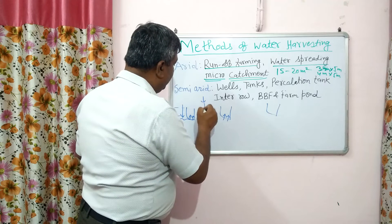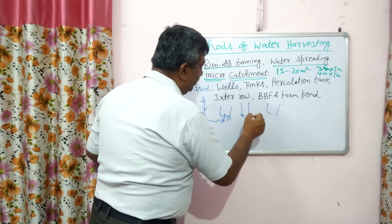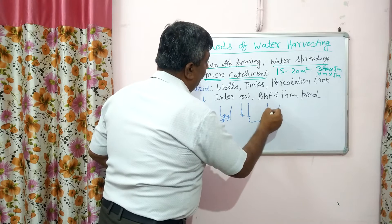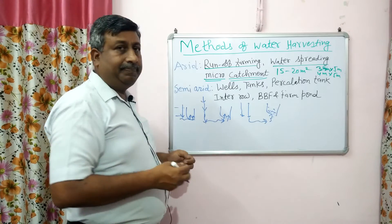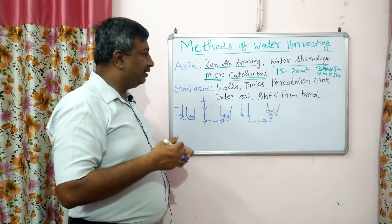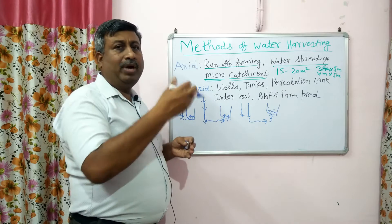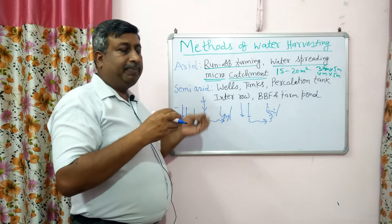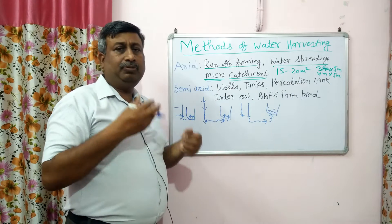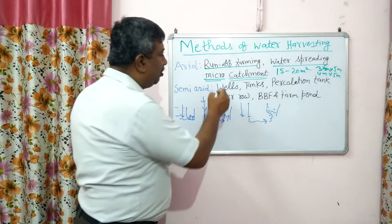Rainfall leads to percolation, which contributes to groundwater and recharges the well through seepage. We can use this well for irrigation, drinking, and livestock — water is lifted from the well. This is a very old but common technique.